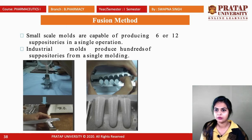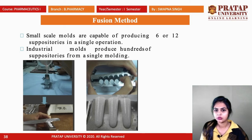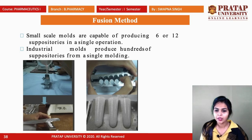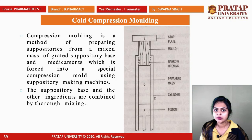Small-scale molds for the fusion method are capable of producing 6 to 12 suppositories in a single operation. Industrial molds can produce 100 suppositories from a single molding — this is the difference between industrial scale and laboratory scale.